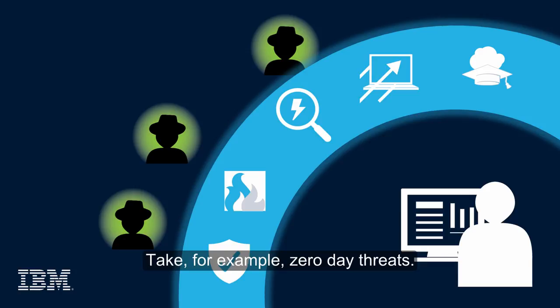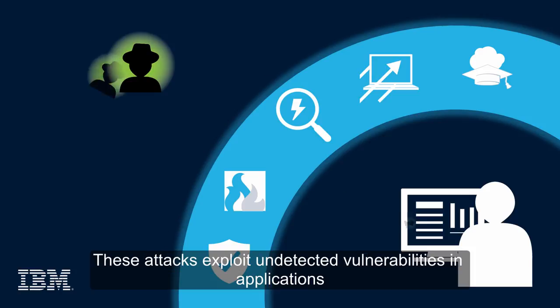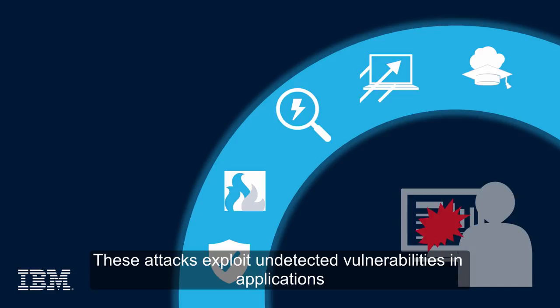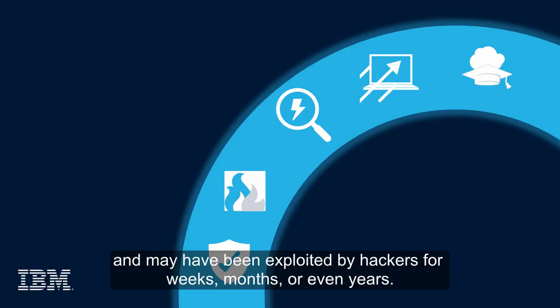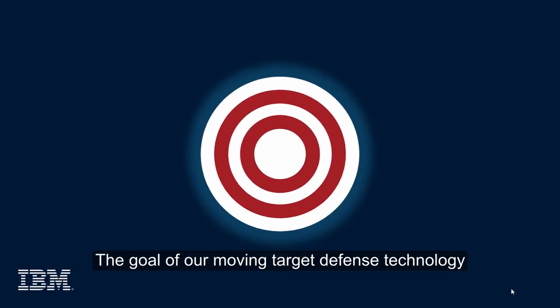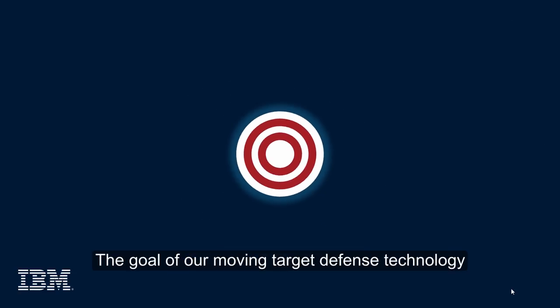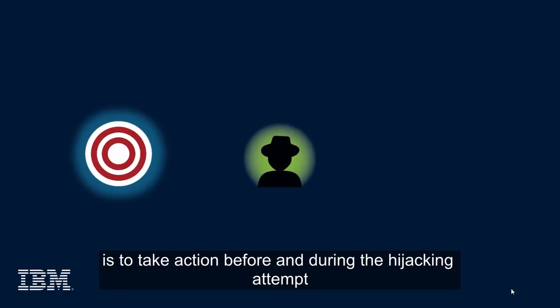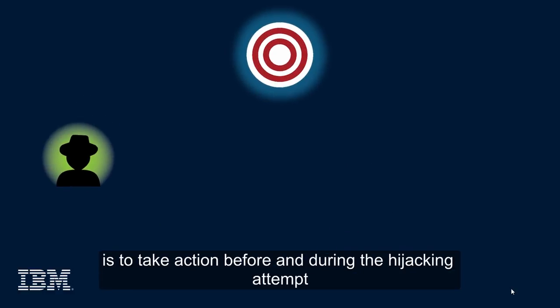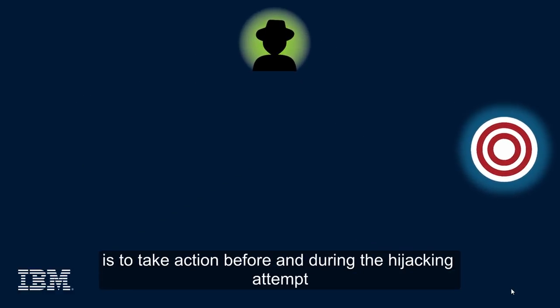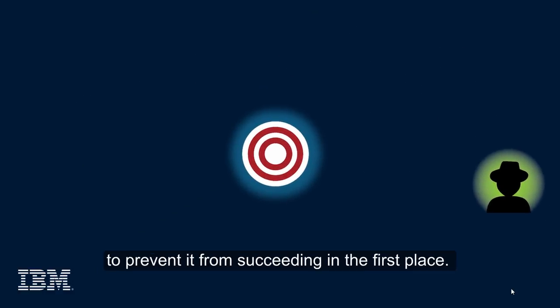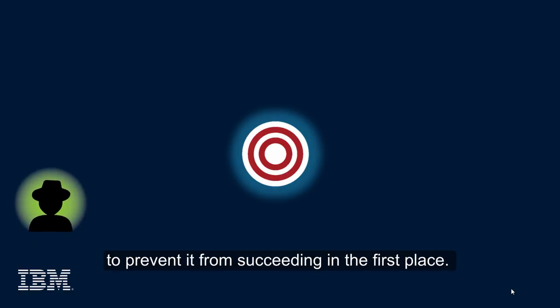Take, for example, zero-day threats. These attacks exploit undetected vulnerabilities in applications and may have been exploited by hackers for weeks, months, or even years. The goal of our moving target defense technology is to take action before and during the hijacking attempt to prevent it from succeeding in the first place.